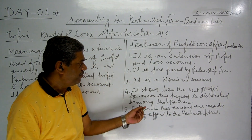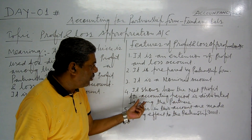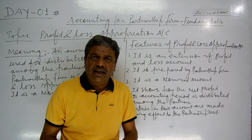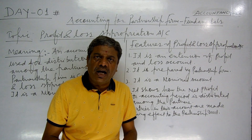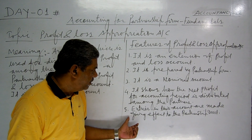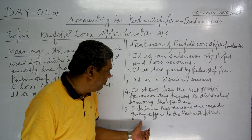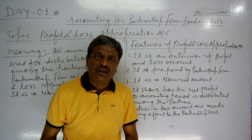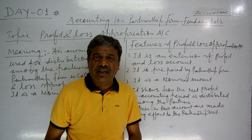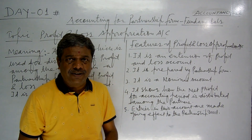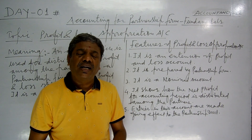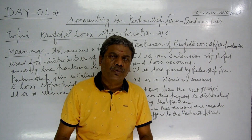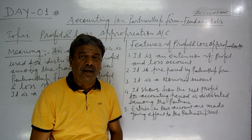Number four: it shows how the net profit for the accounting period is distributed among the partners. Number five: entries in this account are made giving effect to the partnership deed. According to the partnership deed, there are two things considered.